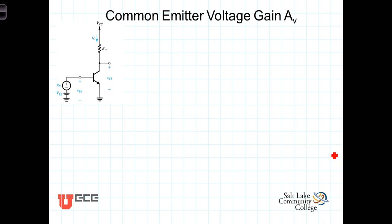This configuration of the BJT transistor with the source applied to the base and the output taken from the collector is an amplifier that will give us amplification, or amplification of voltage, voltage amplification.